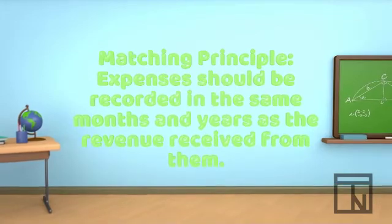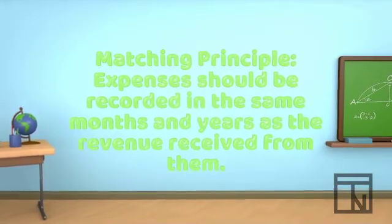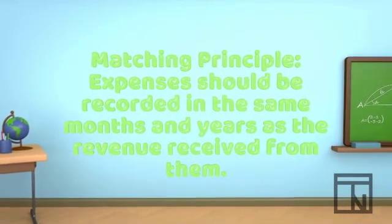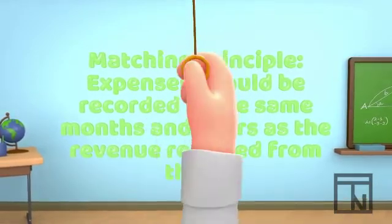So, according to the Matching Principle, he would need to spread the expense of the machine over those seven years so that the expenses for each year match the revenues being earned by the machine that year.